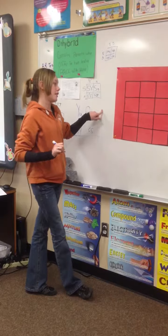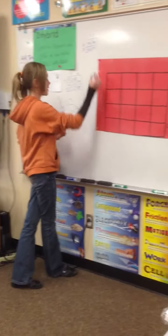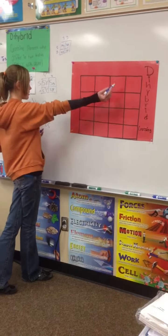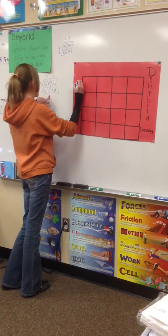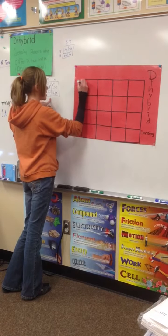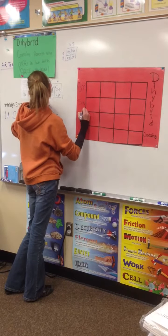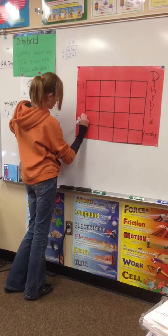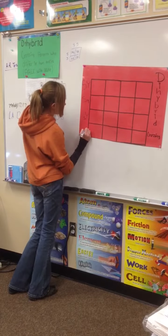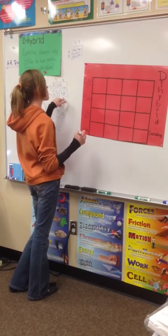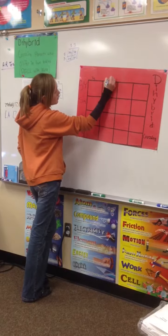Now, to put these on a dihybrid Punnett square, you have to put the male gametes on the side and the females on top. So SpongeBob is - I'm going to use his gametes and put it on the side, which is big S, big Y; big S, little y; little s, big Y; and little s, little y. And for SpongeSusie's trait, it is little s, little y for all of them.